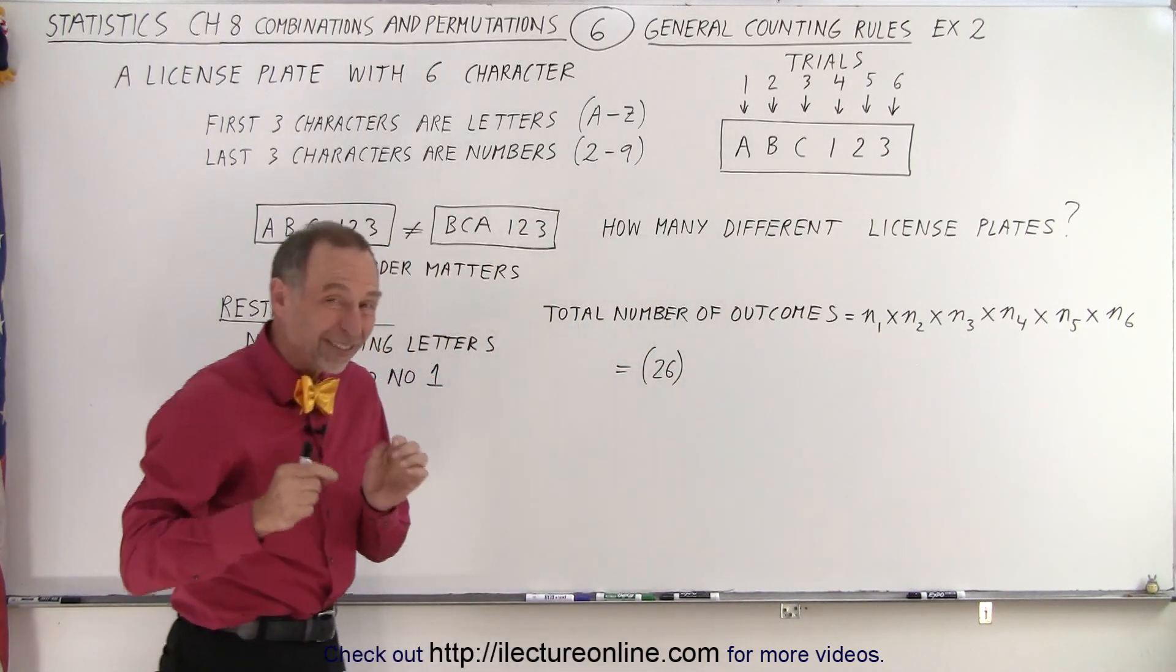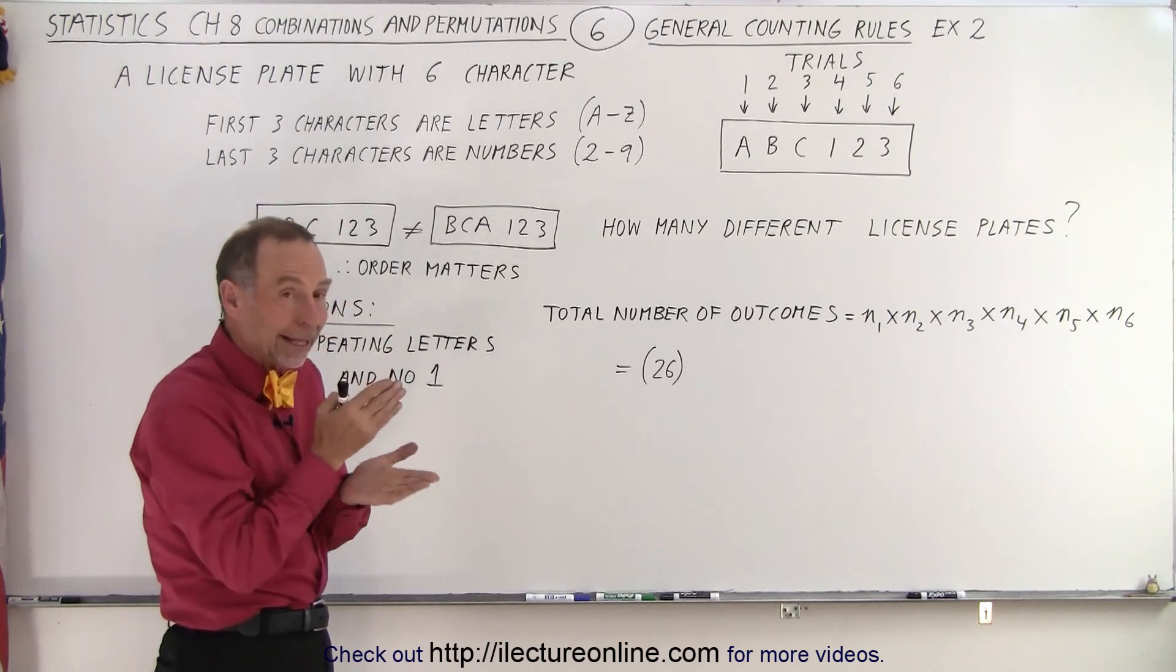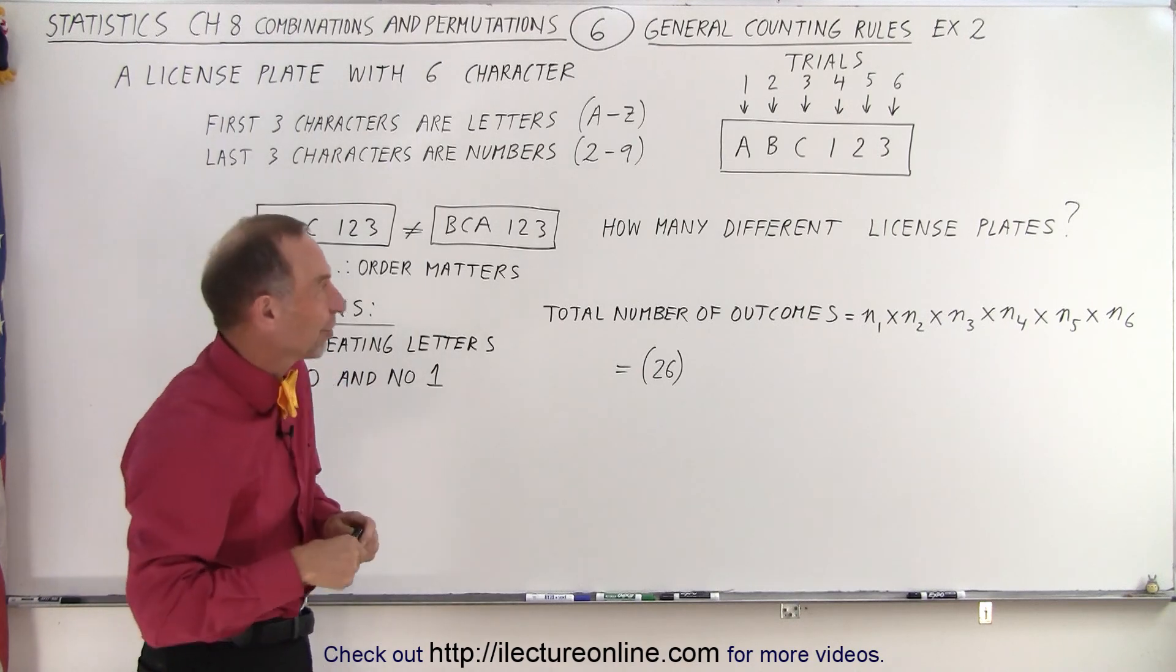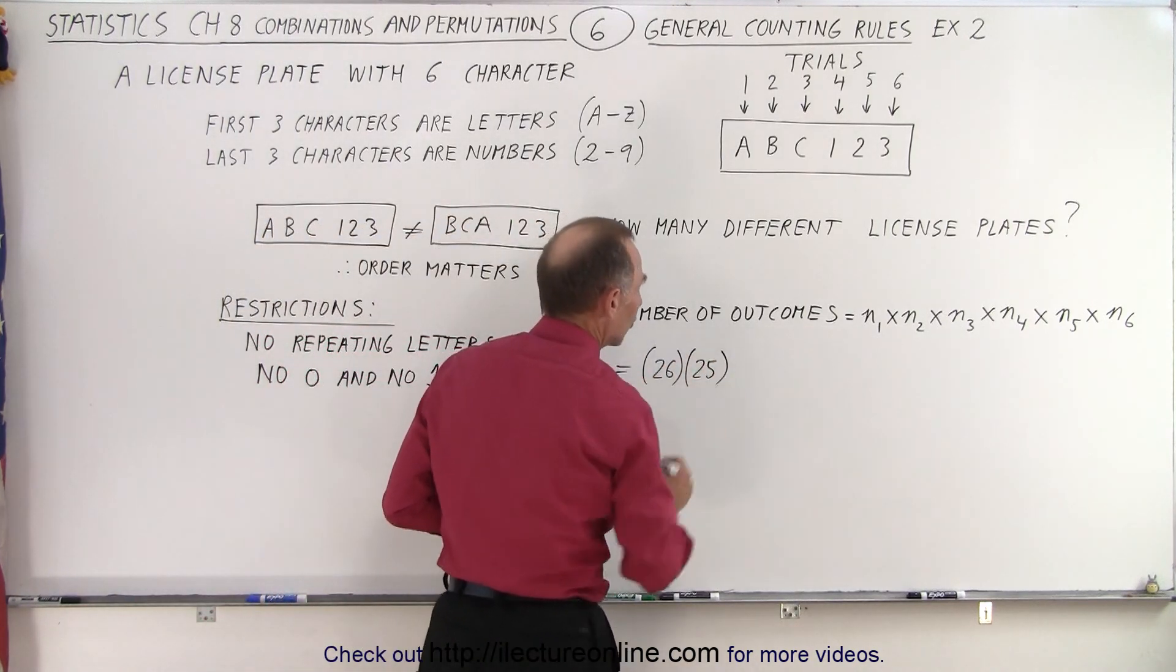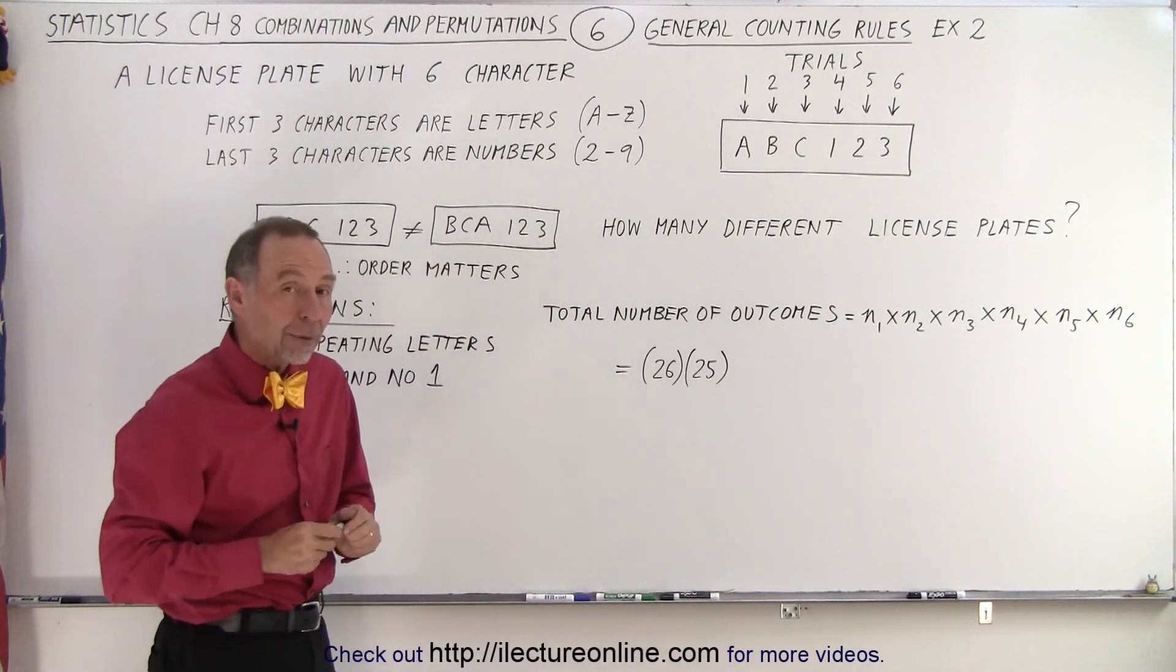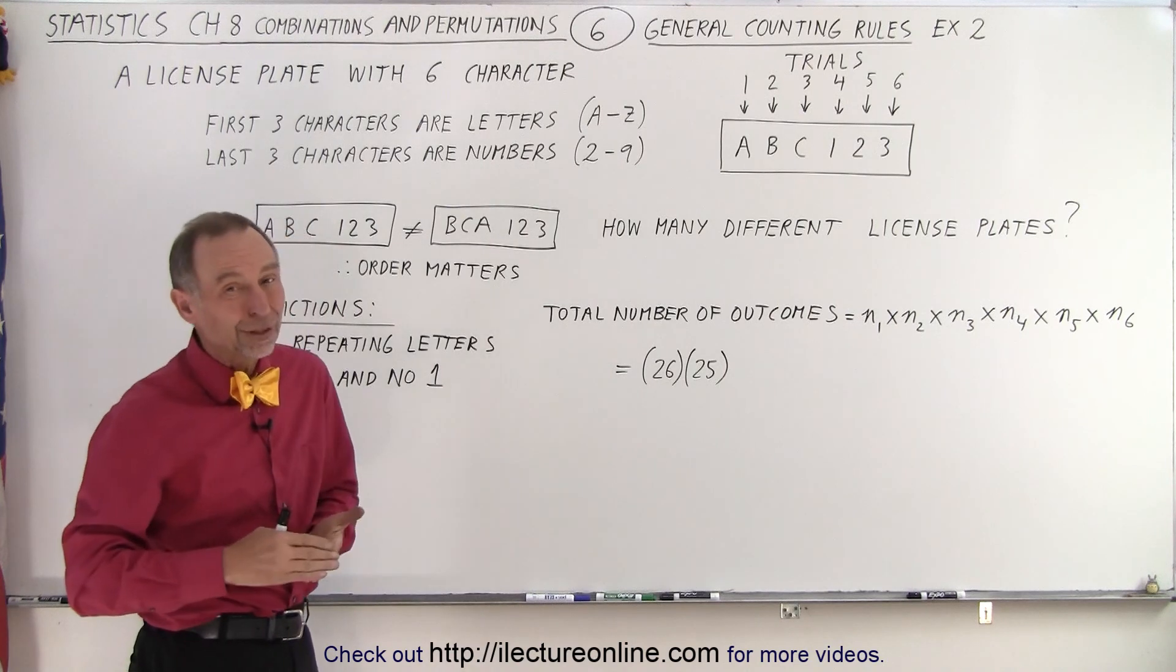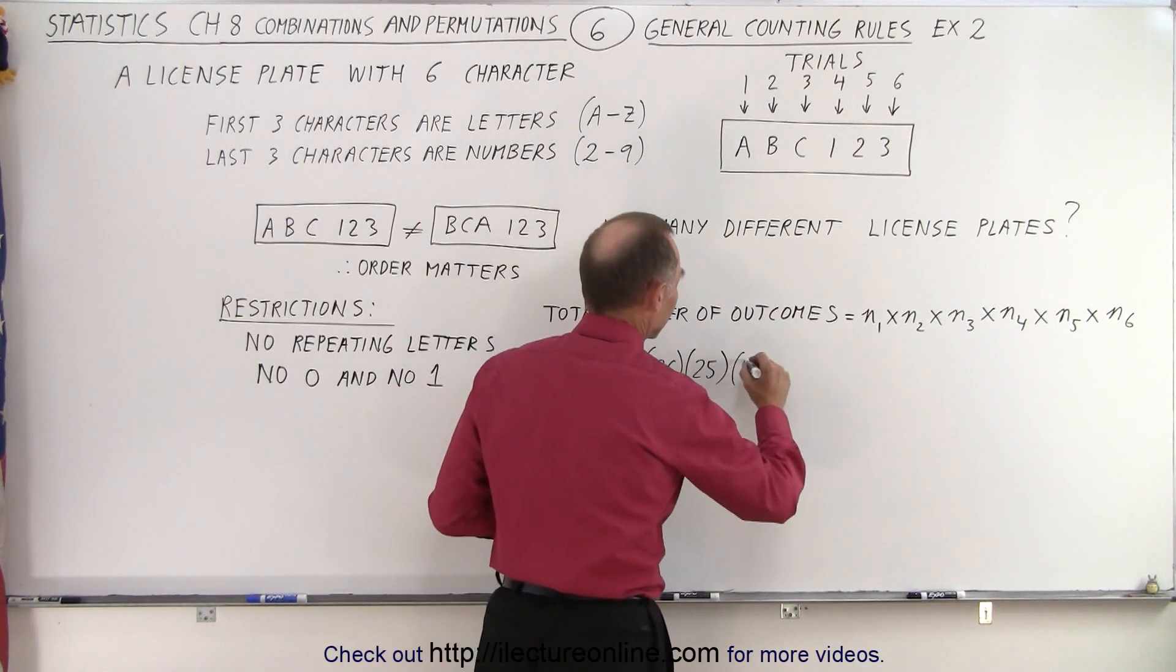But then regardless of which letter we pick on the first character, that letter can no longer be used. So now we only have a choice of 25 letters for the second pick. So that will be the total number of outcomes for the second trial. And then since now we have picked two different letters, for the third letter we can only have 24 remaining we can pick from. So that's the total number of outcomes for that one.